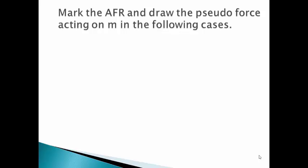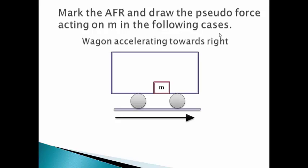Let us solve some examples. Mark the AFR and draw the pseudo force acting on M in the following cases. The first one: a wagon accelerating towards the right. First, we mark the AFR — the wagon itself is accelerating, so it becomes our AFR. If the acceleration is A towards the right side, then force equals mass into acceleration. Here there is no external force acting on M. Hence, the pseudo force will act towards the left side and will equal M times A in magnitude.